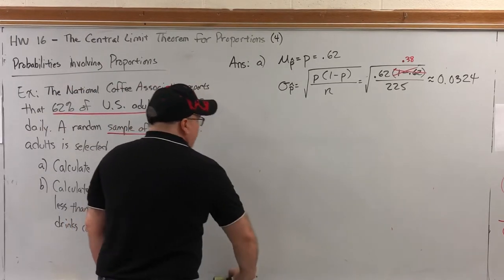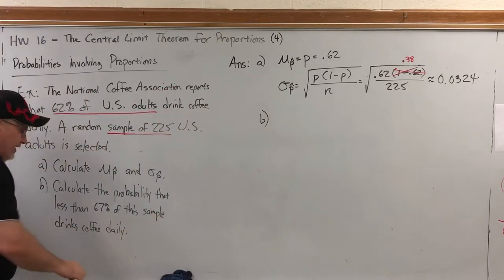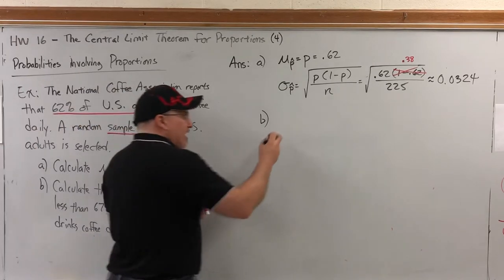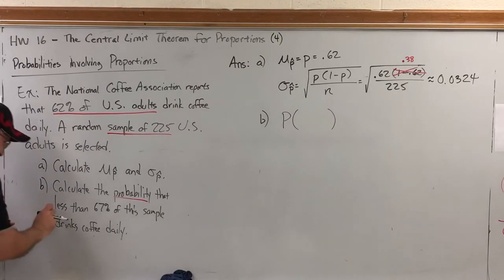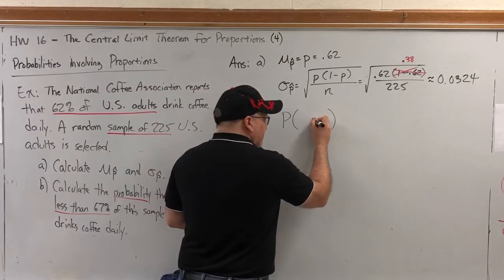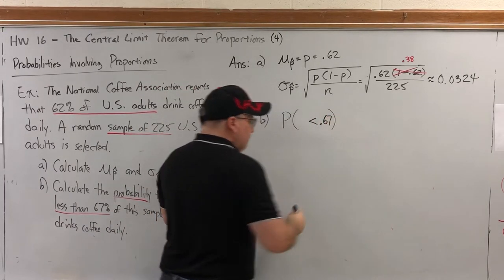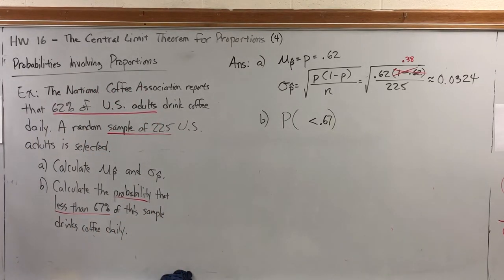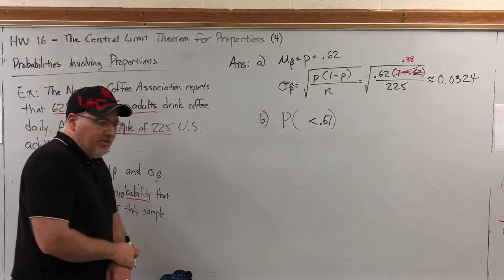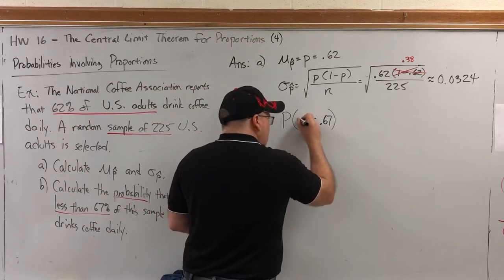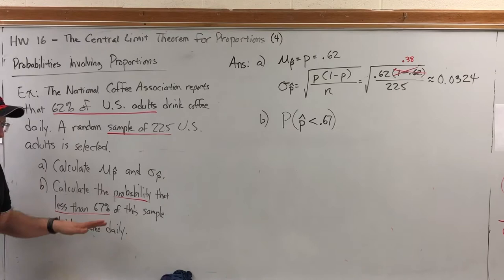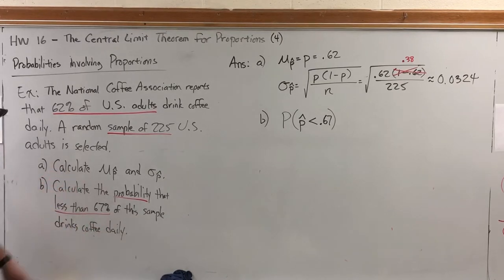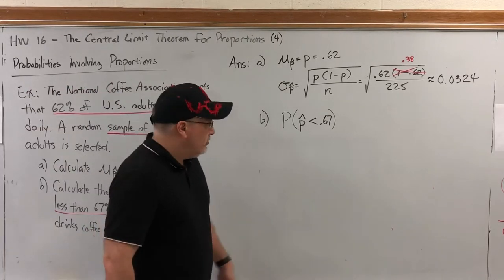So what about part B? Well, first off, we're being asked a probability question, which is that giveaway we should start by writing it with capital P. But the probability of what? That something is less than 67%. So let's write it as a decimal. Something is less than 67%, but what is that something? The percent of the sample is less than 67%, and the variable for the percent of the sample that has a characteristic is P-hat.